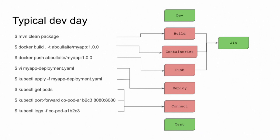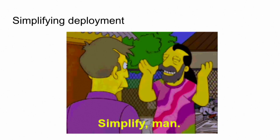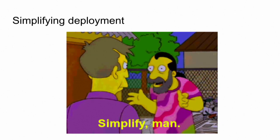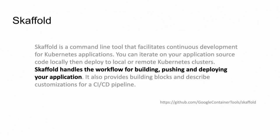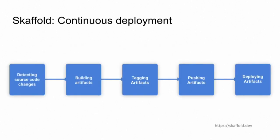We need to simplify deployment to our Kubernetes cluster. For that, there is another cool project from Google, which is Skaffold. Skaffold is a command line tool that takes care of deploying your changes into your Kubernetes cluster. What it basically does: it detects changes in your code, builds an artifact, tags it, pushes it into the registry, and then deploys your artifact into your Kubernetes cluster.